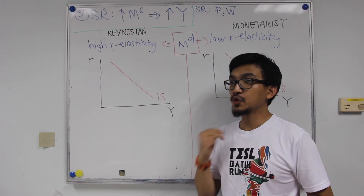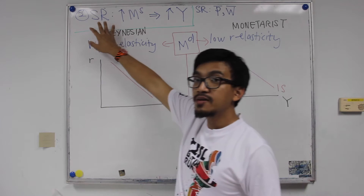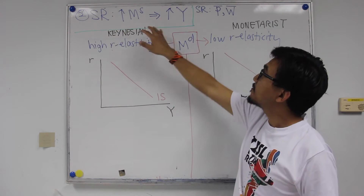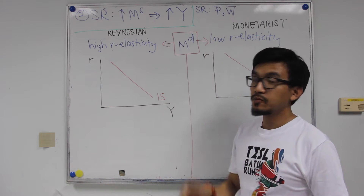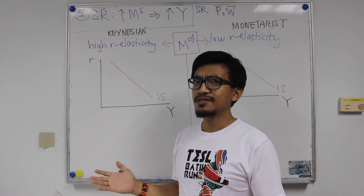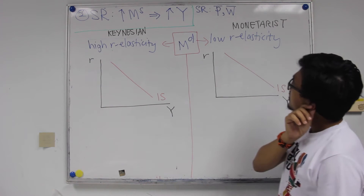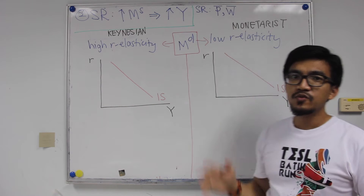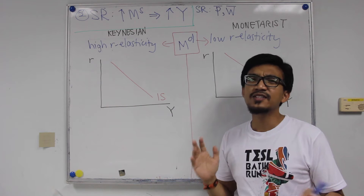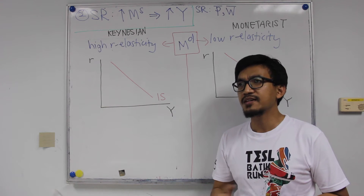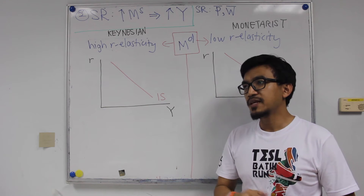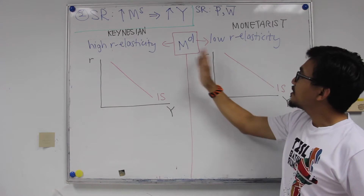Now let's go to Proposition 2. According to monetarists, in the short run a change in money supply will affect real variables like real output. In the short run, we simply assume price to be fixed and nominal wage to be fixed — they are sticky; it takes time for price and wage to change. To make the discussion simple, we assume they are fixed.